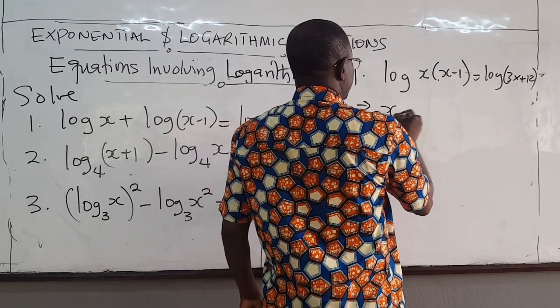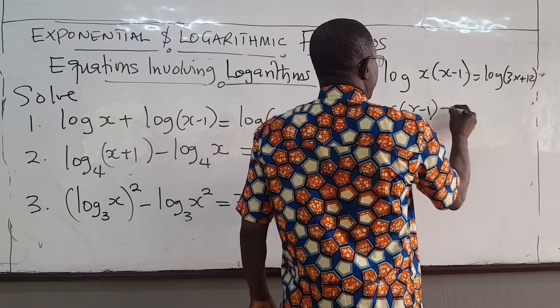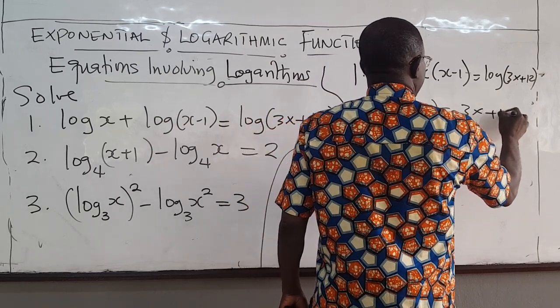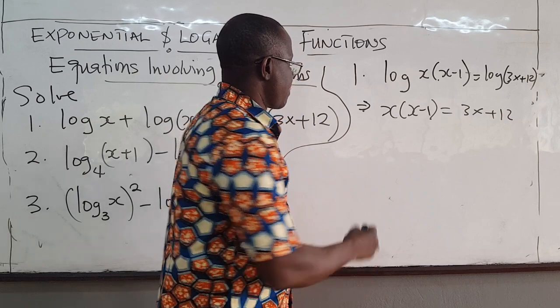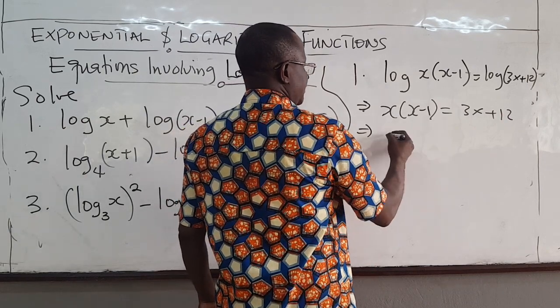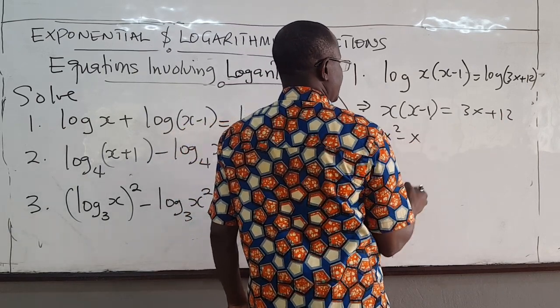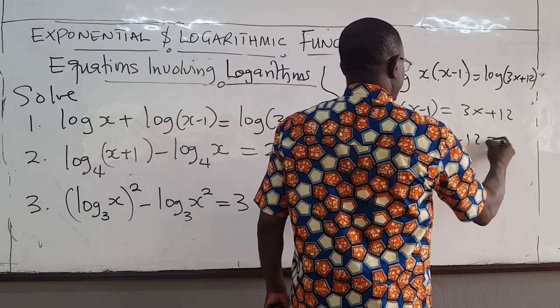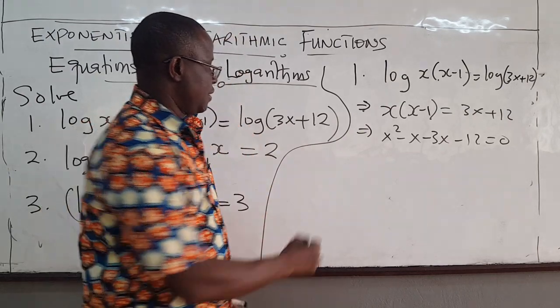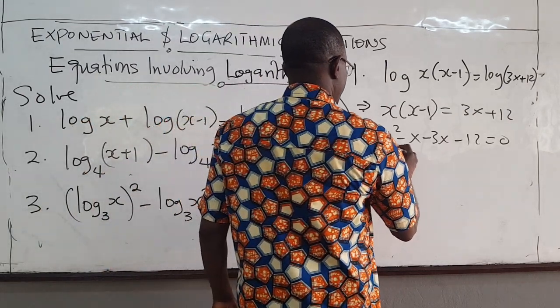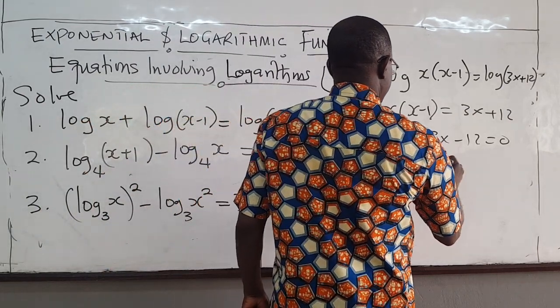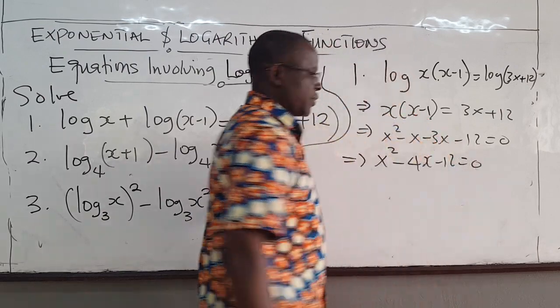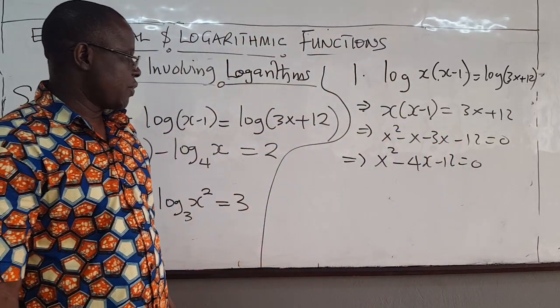So x times x minus 1 has to be equal to 3x plus 12. We can expand this: x squared minus x. When I bring this over, I get minus 3x, minus 12, equal to 0. So x squared minus 4x minus 12 equals 0. It's a quadratic that we need to solve.